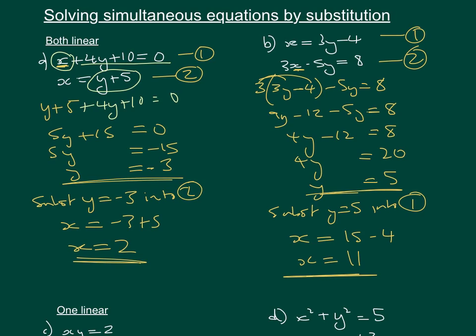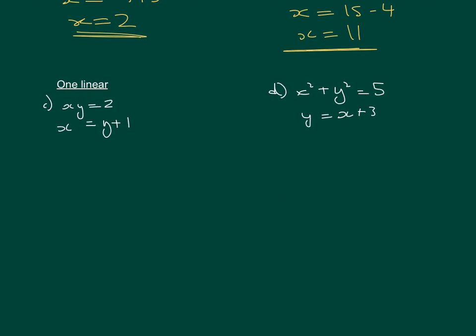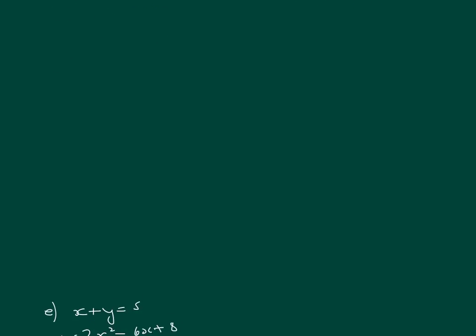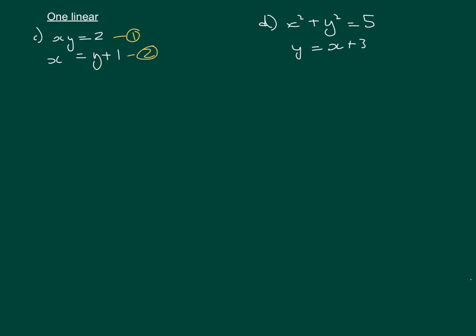Let's move on to where there's one linear and a different type of equation, because this is a lot more tricky — you normally end up having to solve a quadratic. For this first one, we're given x equals y plus 1. So we substitute: y plus 1 times y equals 2.